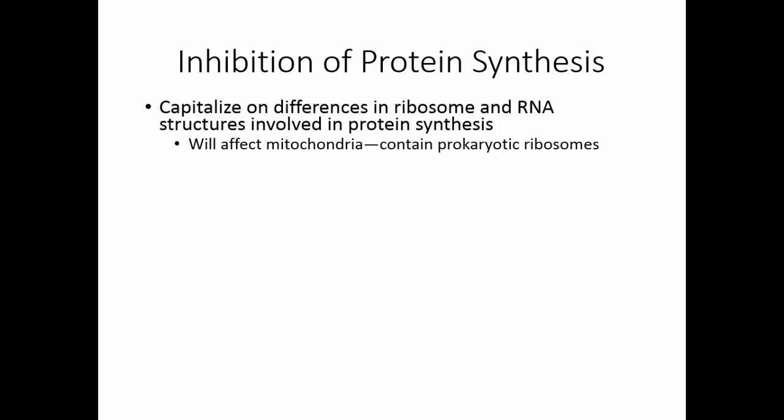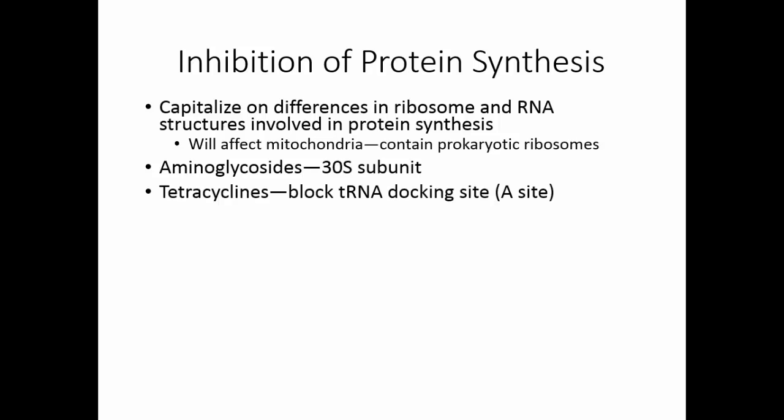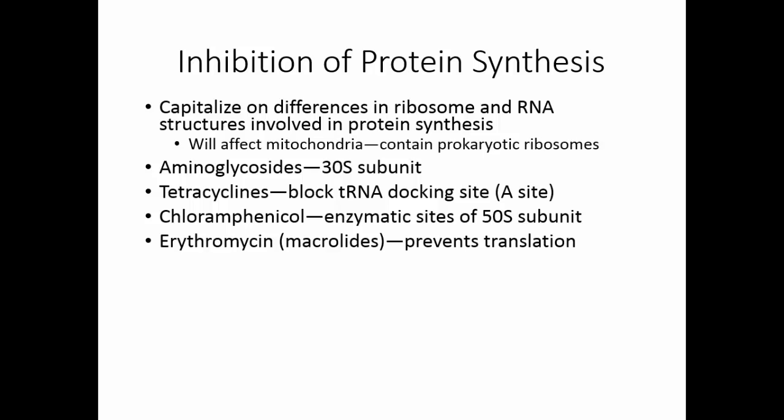So there are sometimes side effects with these antimicrobials. Aminoglycosides, for example, target the 30S subunit. Tetracyclines block the A site — they block where the transfer RNA docks. Chloramphenicol blocks the enzymatic sites of the 50S subunit.